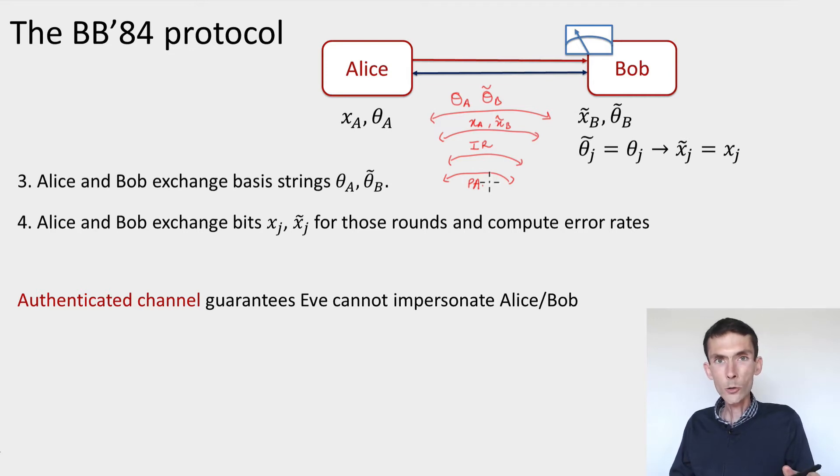If we allowed Eve to corrupt the messages, she could potentially mess up the whole protocol. She could intercept all these bases and these bits and all this information, but she could also modify them and tell Bob some bases that are not the basis choices that were made by Alice. In that case, the protocol would be completely insecure.